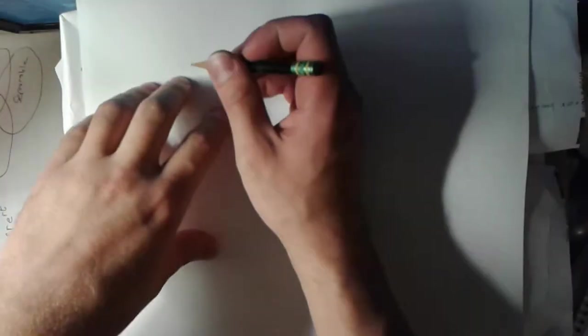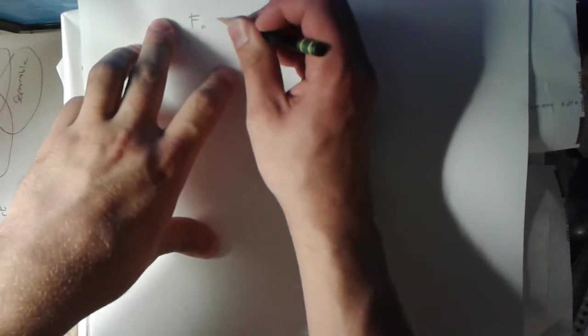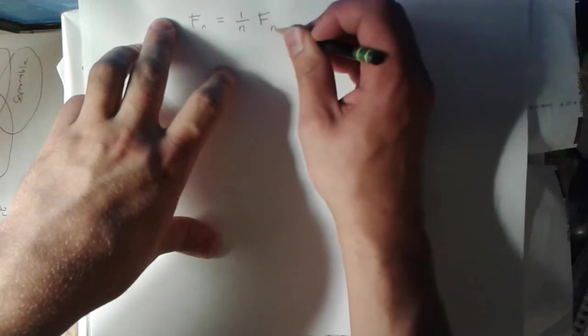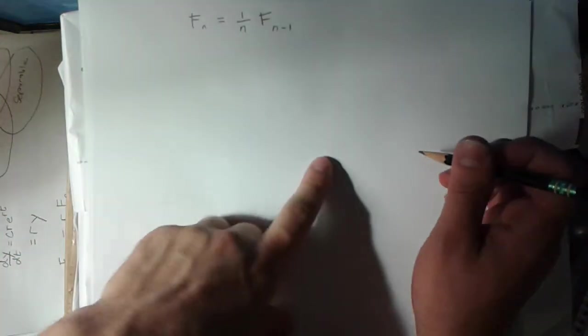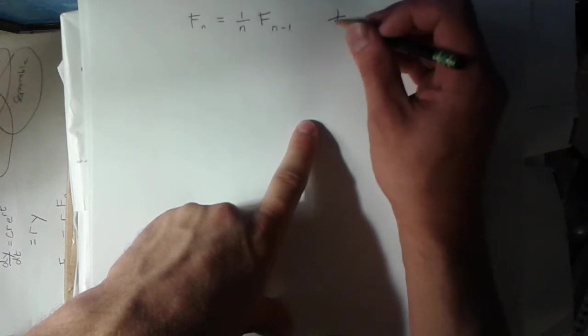The example I'm going to use is f sub n equals 1 over n times f sub n minus 1. And I'm going to call this equation star, just so I can reference it later.